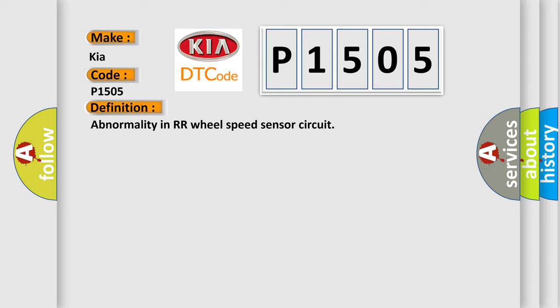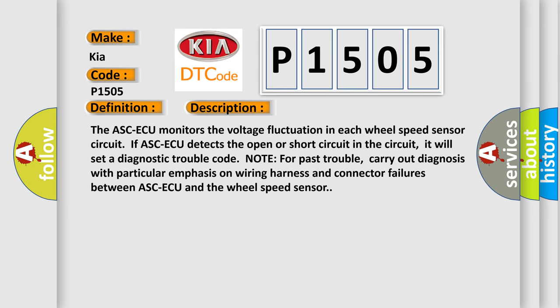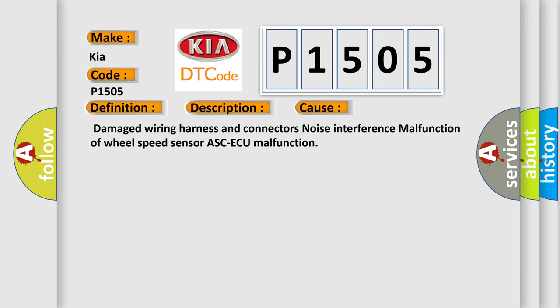The basic definition is: Abnormality in RR wheel speed sensor circuit. The ASC/AQ module monitors the voltage fluctuation in each wheel speed sensor circuit. If ASC/AQ detects an open or short circuit, it will set a diagnostic trouble code. Note: for past trouble, carry out diagnosis with particular emphasis on wiring harness and connector failures between ASC/AQ and the wheel speed sensor. This diagnostic error occurs most often due to damaged wiring harnesses, damaged connectors, noise interference, malfunction of the wheel speed sensor, or ASC/AQ malfunction.